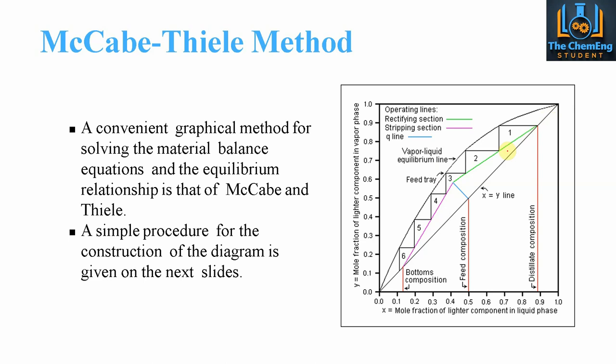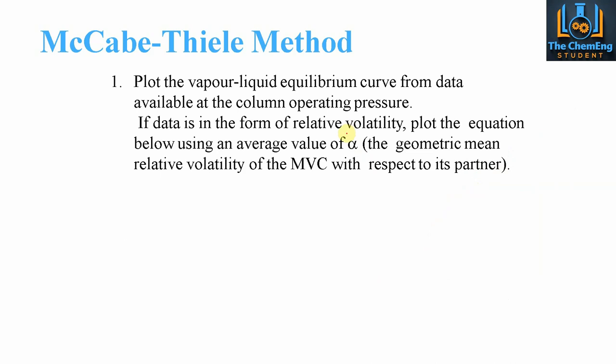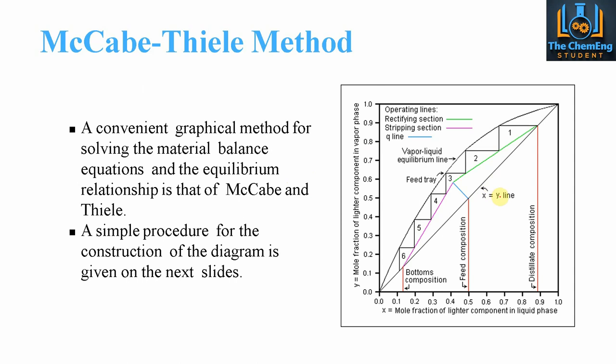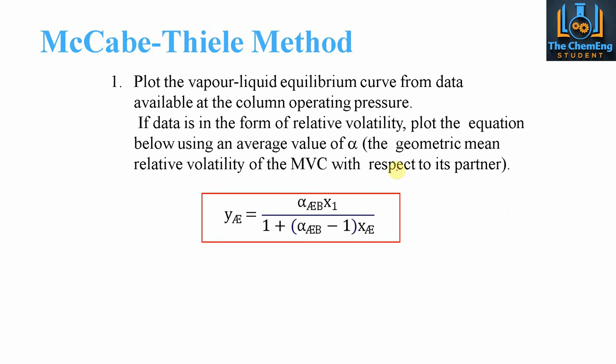Now if the data is in the form of relative volatility, we have another video that goes into what relative volatility and the k-value actually are — I'll put a link in the description. If our information is based on alpha, we take the geometric mean for the relative volatility of the most volatile component (MVC). We use the expression relating y in terms of x to account for the most volatile component, and that gives us the vapour-liquid equilibrium line.